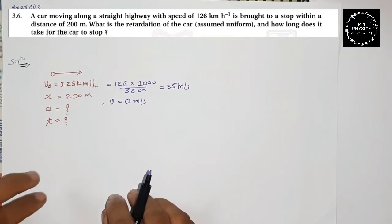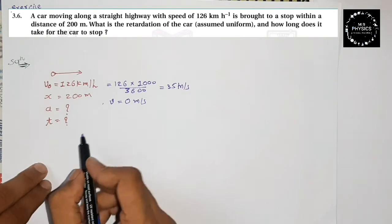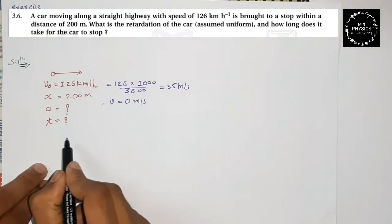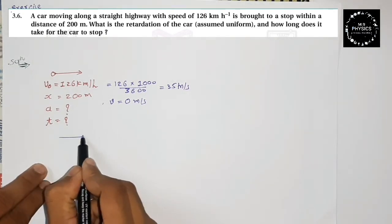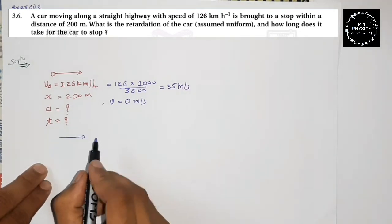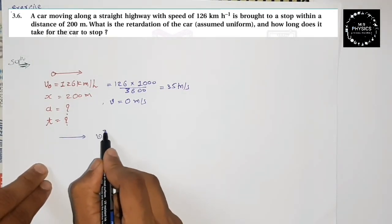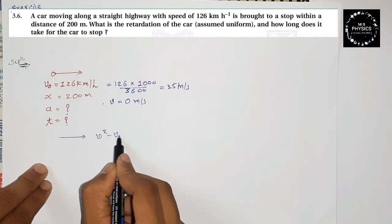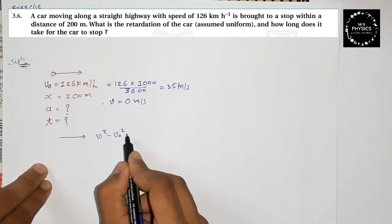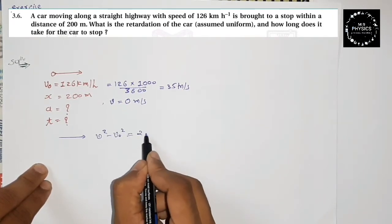You can see that the equation is: v² minus v₀² equals 2ax — this is equation number one. Now put in the values. The final velocity v is zero, so we write 0 squared.